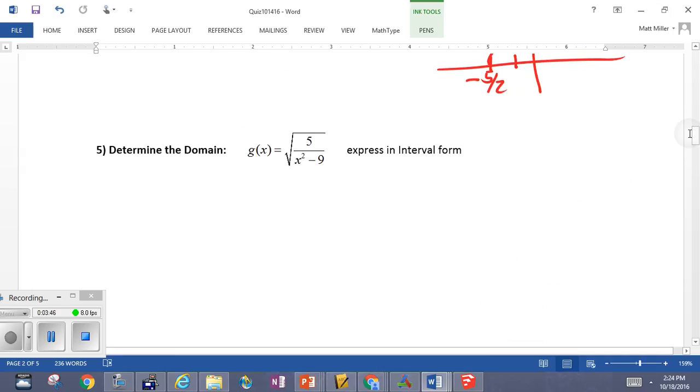Number 5, we are taking the square root. So, what we take the square root of is only positives. So, that means the expression 5 over x squared minus 9 must always be positive, which means it always is greater than 0.